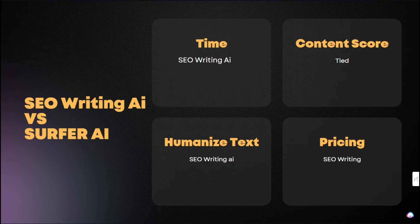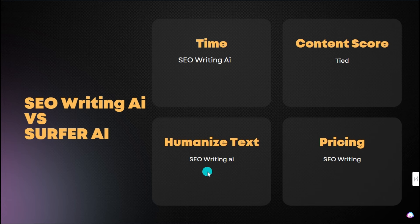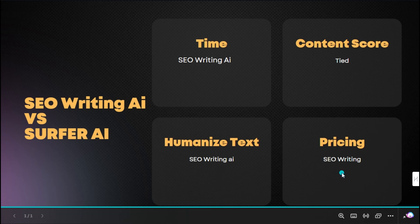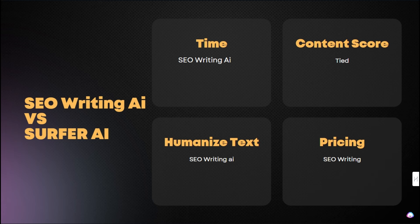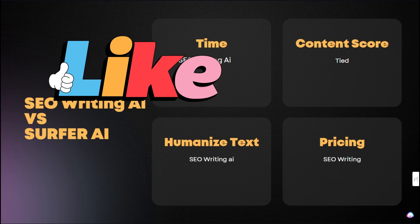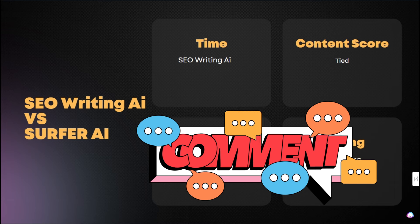When it comes to SEOWriting.ai versus Surfer AI: for time, I give it to SEOWriting.ai — it wrote the article in just two minutes. For content score, it's a tie — both provided a very high, optimized content score. For humanized text, I give it to SEOWriting.ai, as it had a lower AI detection score — Surfer AI was 100% AI. For pricing, again SEOWriting.ai wins — you can write 50 articles at the same price as one Surfer AI article. If you enjoyed this video please hit like and subscribe, leave any questions in the comments, and I'll see you in the next video. Thanks for watching.